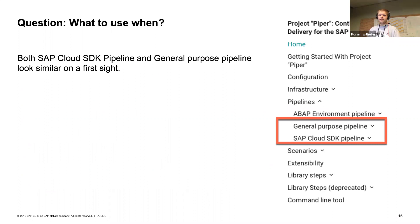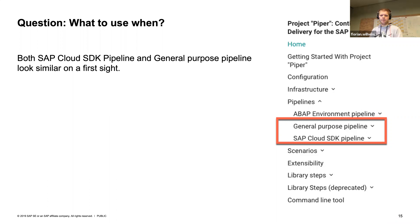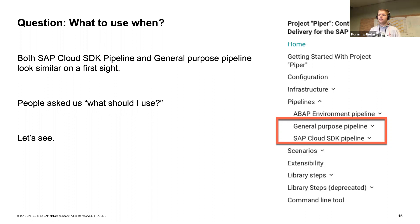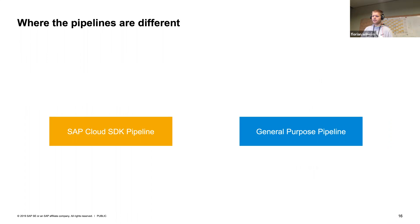Looking at the Project Piper documentation, you can see the library steps, the command-line tool, the infrastructure with Docker images, and then under pipelines: the SAP Build Environment pipeline, a General Purpose pipeline, and the SAP Cloud SDK pipeline. People looking at the documentation quite rightly asked: what is the difference? What should I use? It's not really clear. Let's answer that question.